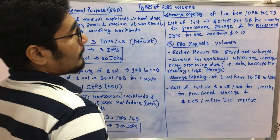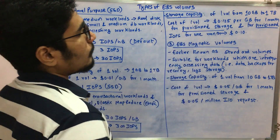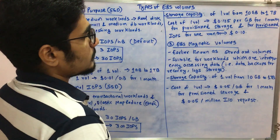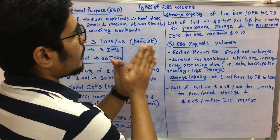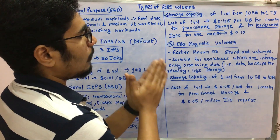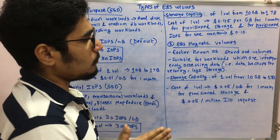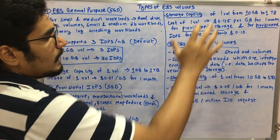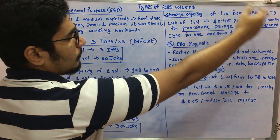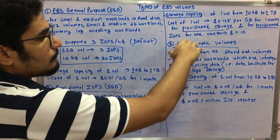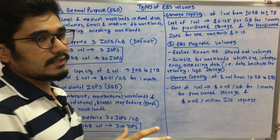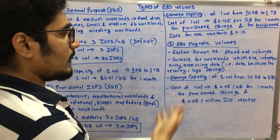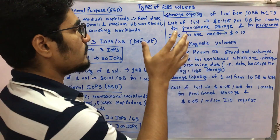The storage capacity for Provisioned IOPS is 10 GB to 1 TB per volume. The cost is $0.125 per GB per month for provisioned storage, and $0.10 per month for provisioned IOPS.